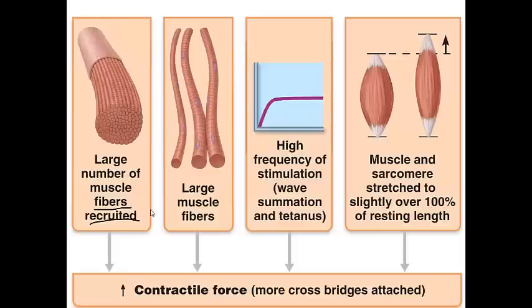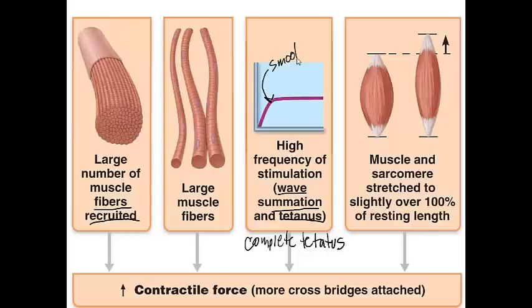The next factor is the size of the muscle fiber itself. The third factor is high frequency of stimulation — wave summation — which leads to tetanus. A smooth sustained muscle contraction is called complete tetanus, where waves summate on top of each other producing a smooth tetanic contraction. The last factor is muscle and sarcomere stretch — there is an optimal stretch of the sarcomeres to a point where all possible cross bridges have formed, as this is a limiting factor.